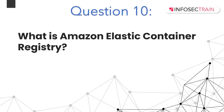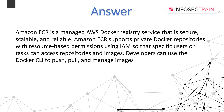What is Amazon Elastic Container Registry (ECR)? Amazon ECR is a managed AWS Docker registry service that is secure, scalable, and reliable. ECR supports private Docker repositories with resource-based permissions using IAM, so that specific users or tasks can access repositories and images. Developers can use the Docker CLI to push, pull, and manage images.